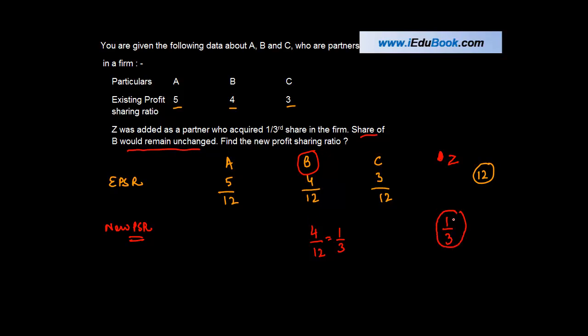Now three partners were there, one of them did not lose out anything, which means that the share which Z has acquired has come from C and from A. The question is in what ratio? But interestingly we don't have any clues in the question as to how this share is to be reduced from both of them. Under such circumstances, we assume that both of them have contributed this share in the proportion in which they were already sharing their profits.